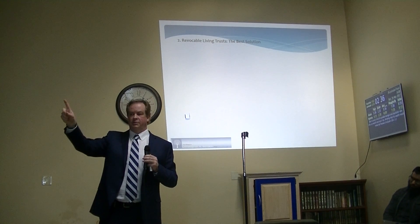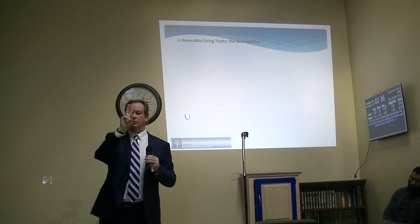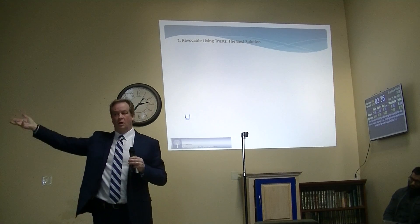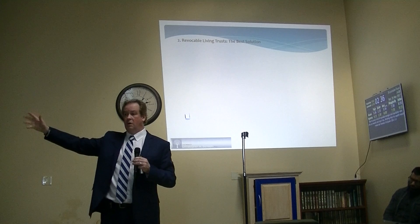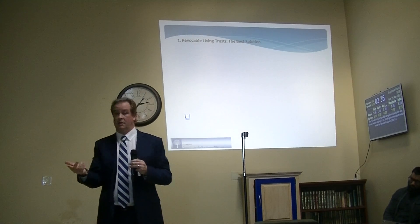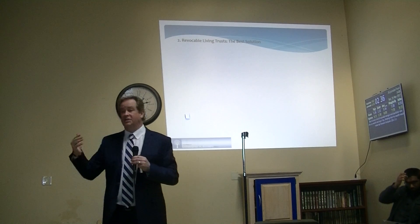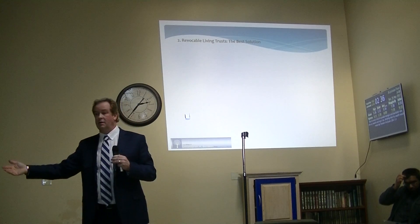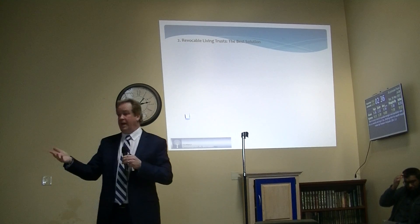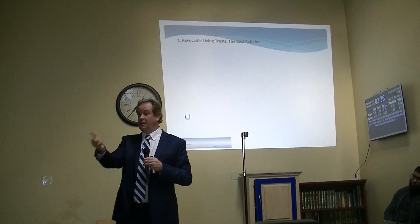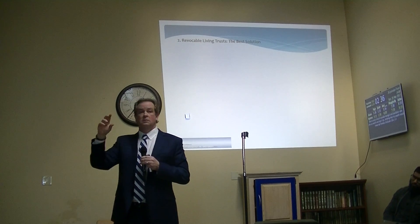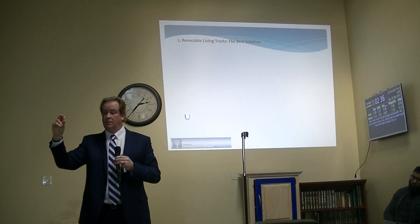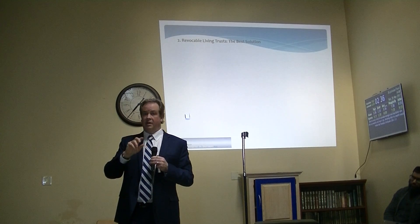Spouse one owns 50%, spouse two owns 50%. Spouse one dies — what are we doing with it? You can buy the property as joint tenants with right of survivorship, or tenants by the entirety. In that case, one spouse dies, the other spouse gets it. You can have a bank account as joint tenants with right of survivorship, or tenants in common.